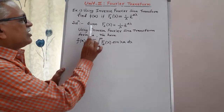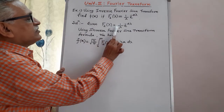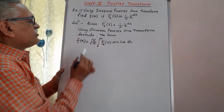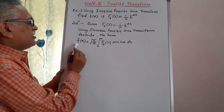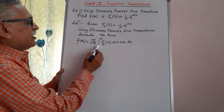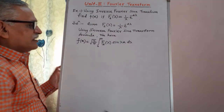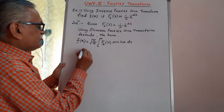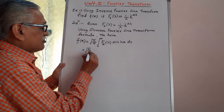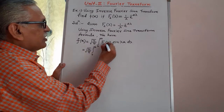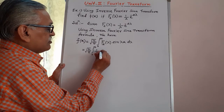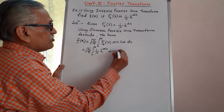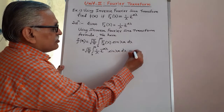Solution: here given fs(λ), that is the Fourier sine transform, is equal to 1 by λ, e raised to minus a λ. Then using the inverse Fourier sine transform formula, we have f of x equals root 2 by π, integral from 0 to infinity, fs(λ) sin(λx) dλ. Substituting the value of fs(λ), we get root 2 by π, integration from 0 to infinity, 1 by λ, e raised to minus a λ, into sin(λx) dλ. We call this equation 1.